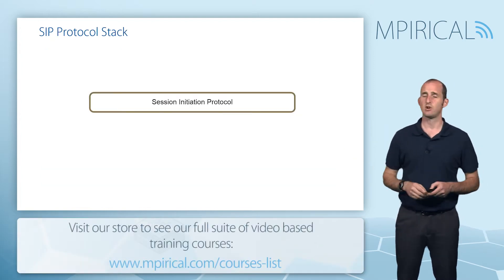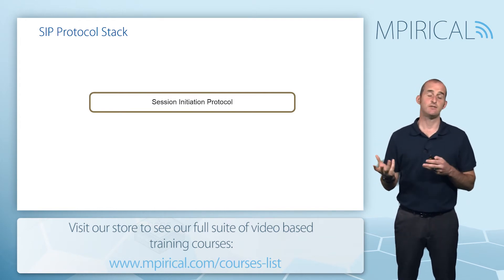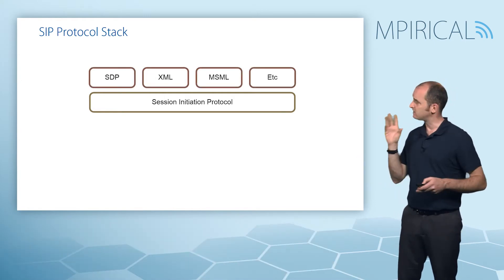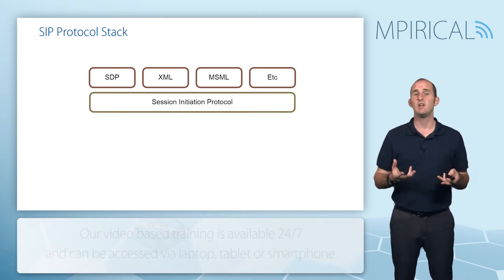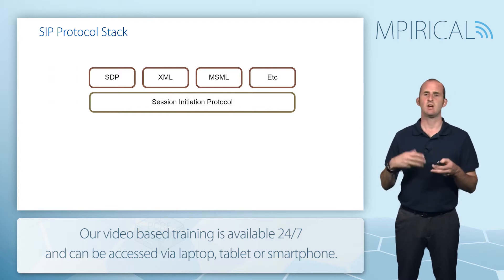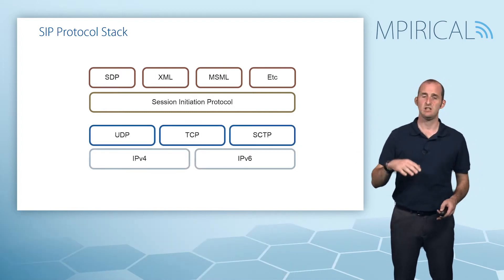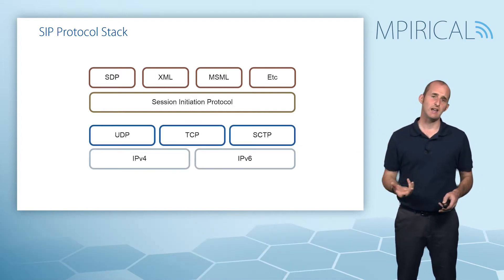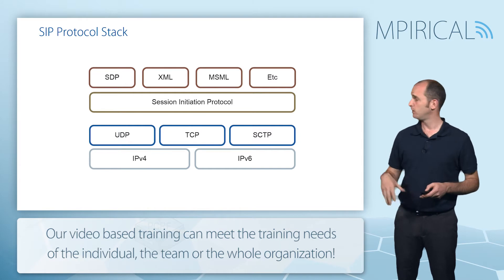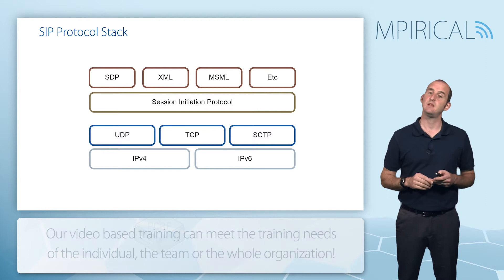Let's take a look at the protocol stack to begin with. SDP and XML are very popular examples of payloads that SIP can carry, particularly in terms of the session establishment procedures involved with SIP. As you can see, SIP can actually be carried over a variety of different transport protocols. UDP is a very common way to carry SIP, but you may also see it being carried over TCP and in some cases SCTP as well.